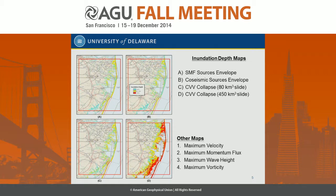In addition to inundation depth maps, we generated maximum velocity and maximum momentum flux maps as well. For navigational and maritime uses, we also generated maximum wave height and maximum velocity maps.